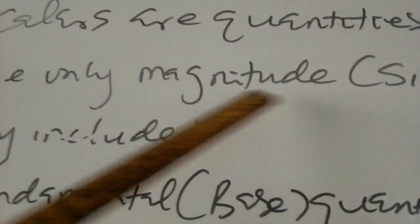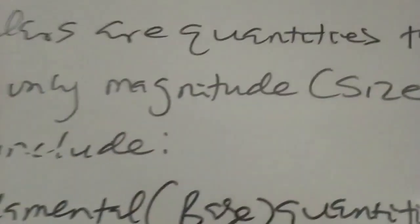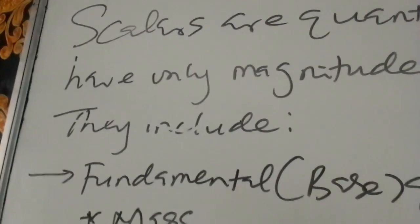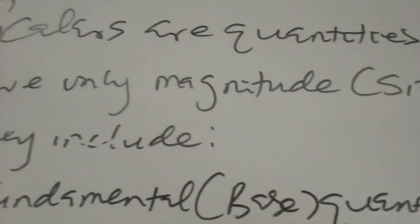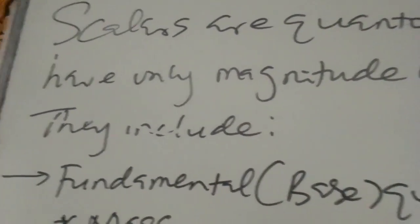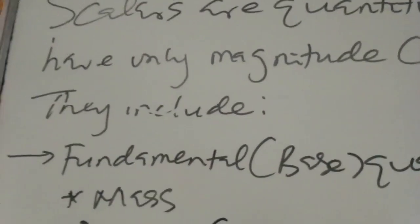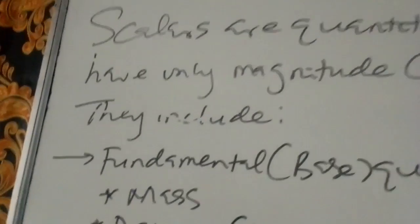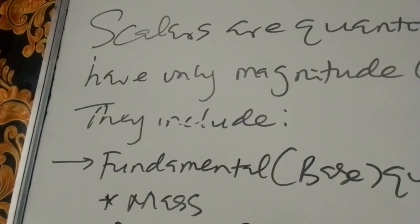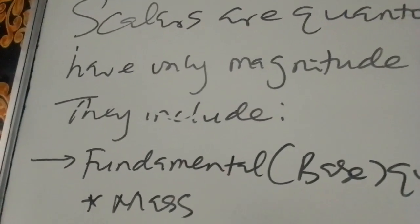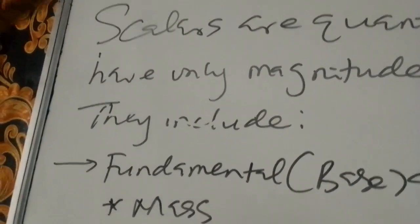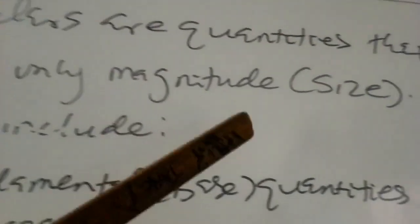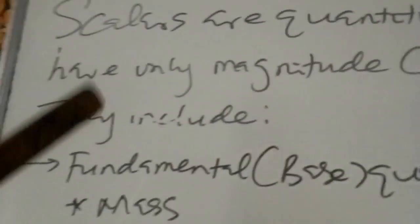Scalars are quantities in physics that have only magnitude or size — they don't have any direction. So scalar quantities have only magnitude or size but no direction. Just like when somebody calls you a scalar, it's not saying anything good about you — a scalar has size but no direction. I'd rather be called a vector than a scalar.